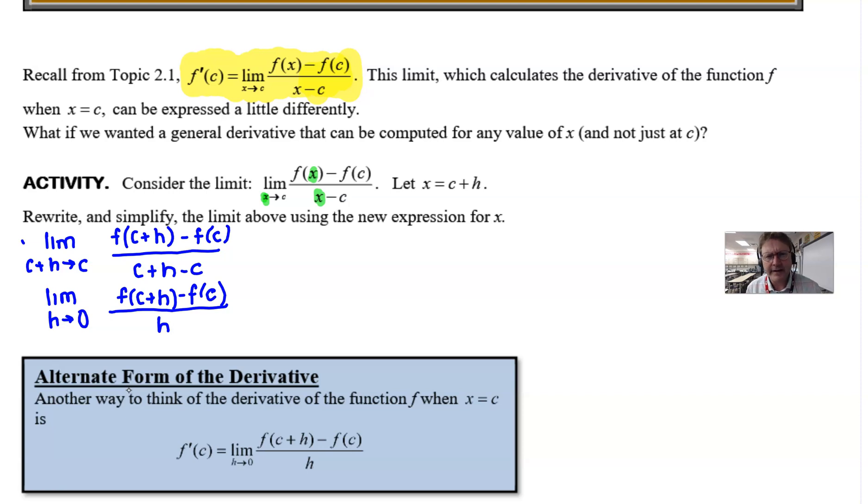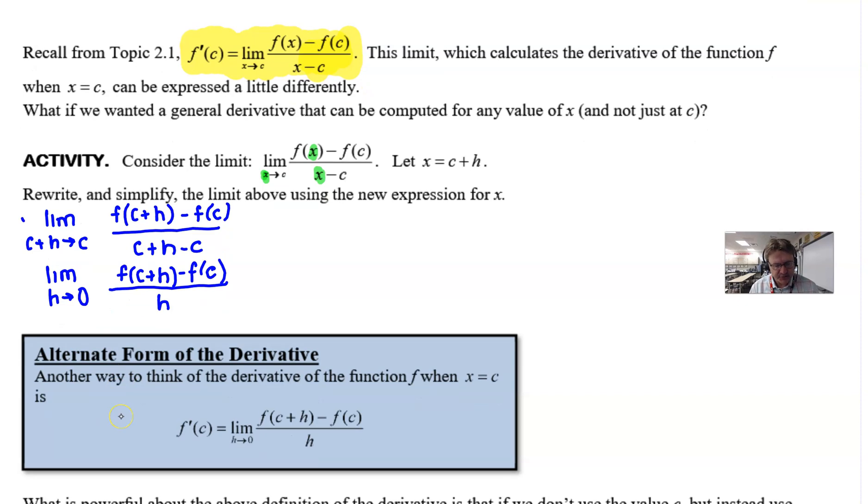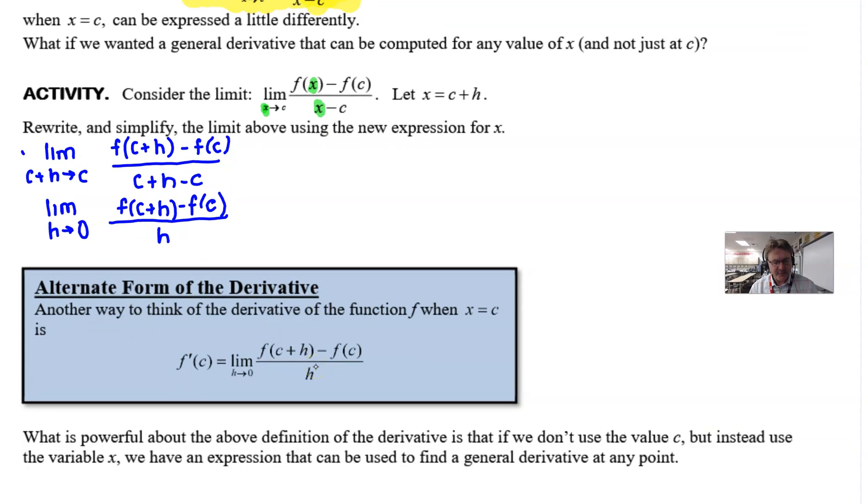Okay, why did we learn this? Well, it's not until you get to the next page. What is very powerful about this above definition is that if we don't use a value c inside of that function—in other words, if we think about using something else for those three instances of c—we could use a random variable x. Remember, c is a specific number like 2, negative 1, 5, whatever, but if we use x in those places, then we can encompass every single number and have a very general definition of the derivative at any point on our graph.